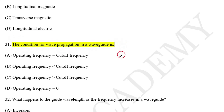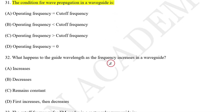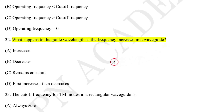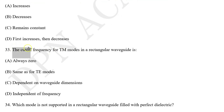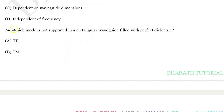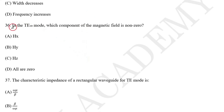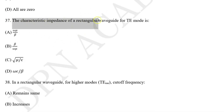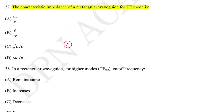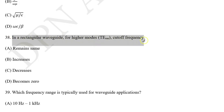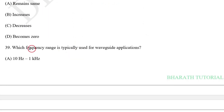Question number 31: The condition for wave propagation in a waveguide is? Question number 32: What happens to the guide wavelength as frequency increases in a waveguide? Question number 33: The cutoff frequency for TE mode in a rectangular waveguide is? These are all the expected questions. Question number 34: Which mode is not supported in a rectangular waveguide filled with perfect dielectric? Question number 35: In a waveguide, the cutoff frequency for TE10 mode increases if? Question number 36: In TE10 mode, which component of magnetic field is non-zero? Question number 37: The characteristic impedance of a rectangular waveguide for TE mode is? Question number 38: In a rectangular waveguide, for TM mode, cutoff frequency for TE-MN mode? Question number 39: Which frequency range is typically used for waveguide applications?